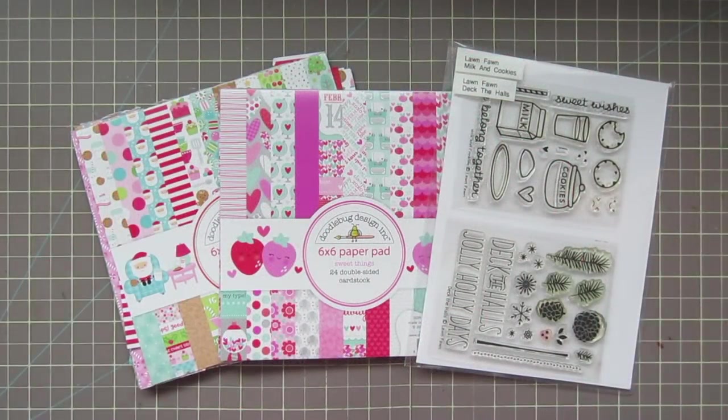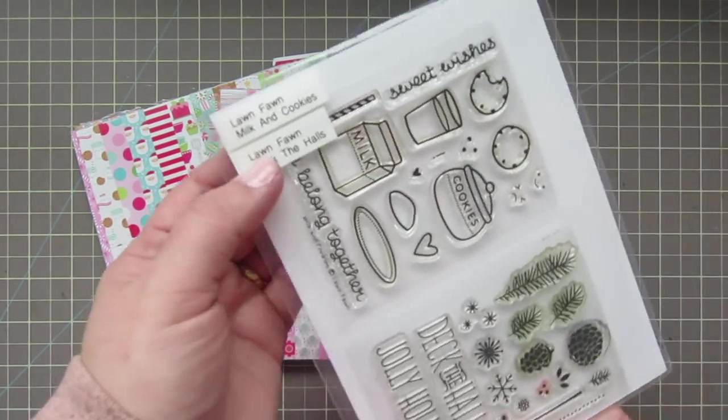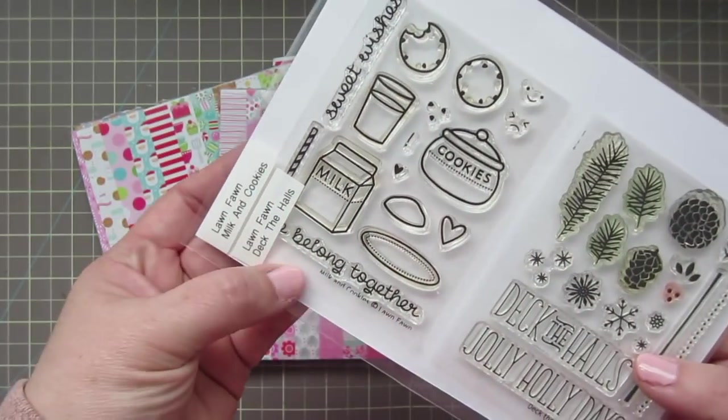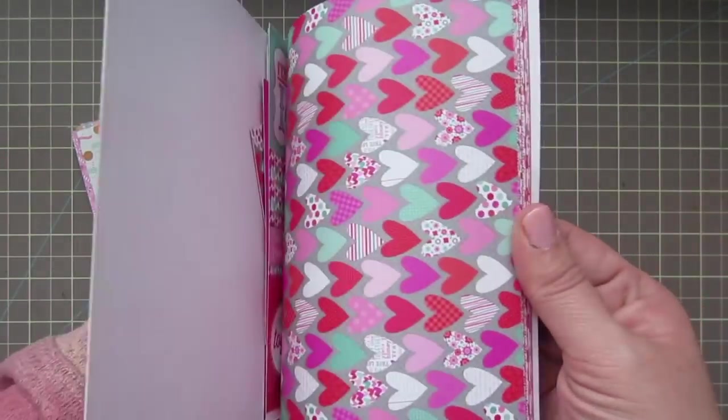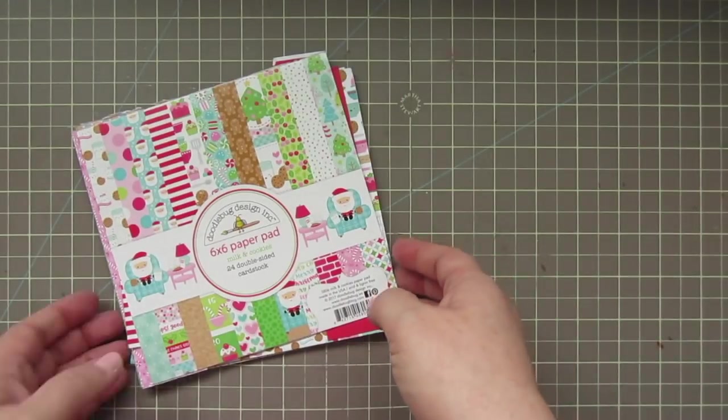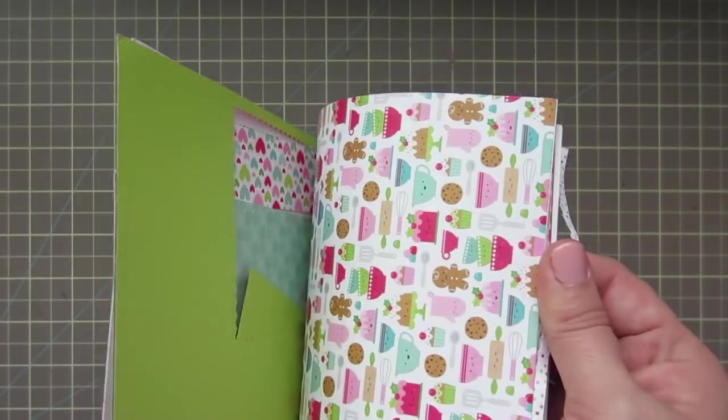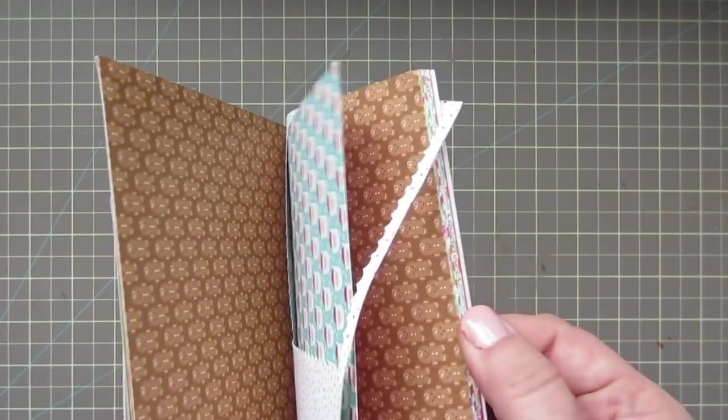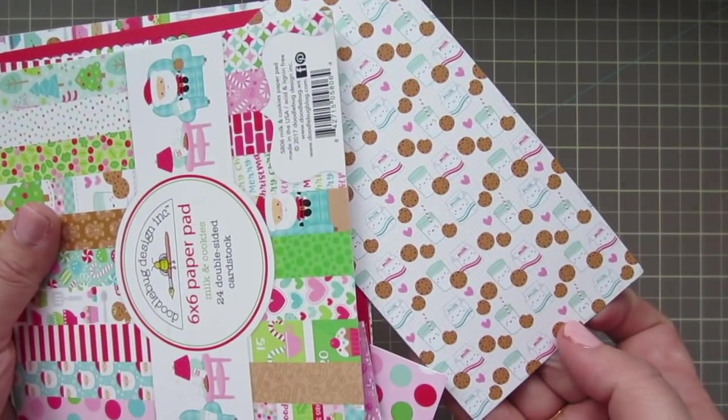Hey everyone, it's Christie. Welcome back to my channel. Happy New Year and welcome to my 2018 Valentine card series. We're starting things off with a card using Lawn Fawn's Milk and Cookies stamp set, as well as the Doodlebug Sweet Things 6x6, and then one pattern from the Milk and Cookies Christmas Pad from Doodlebug, which actually inspired this entire card.